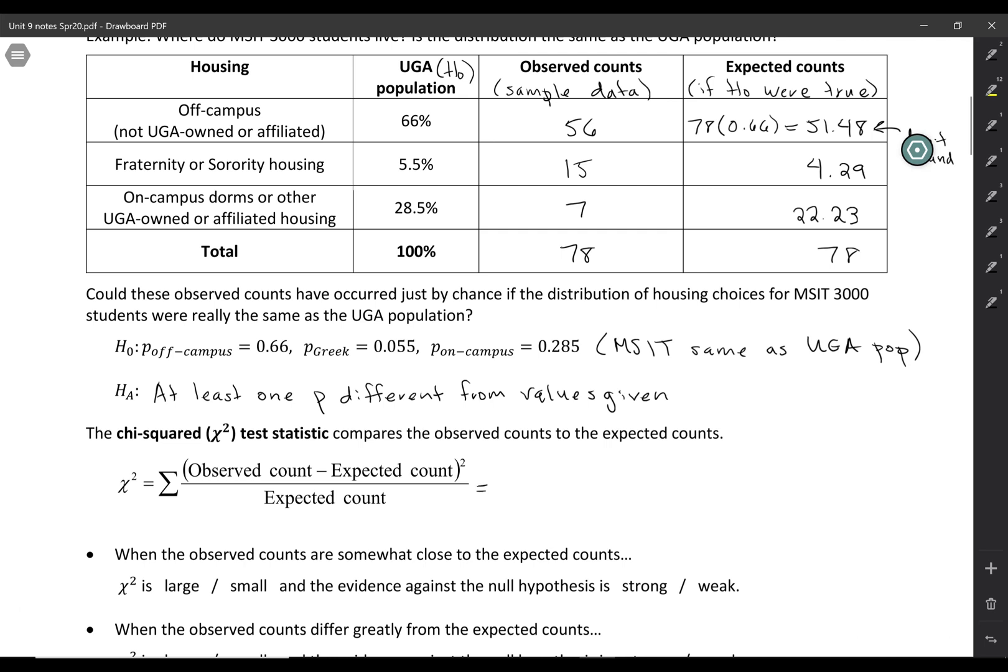So we're going to do this one category at a time. So we'll start with off-campus. Our actual data, the observed count was 56. Our expected count that we calculated was 51.48. We're going to square that. Put the expected count down here, 51.48. This sigma, this uppercase sigma, that's a sum. So we're going to add it up and we're going to do this for each of the categories.